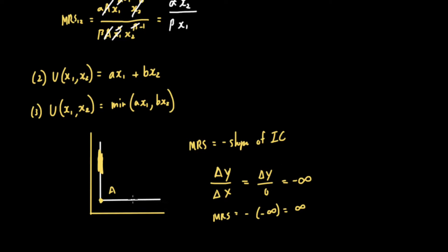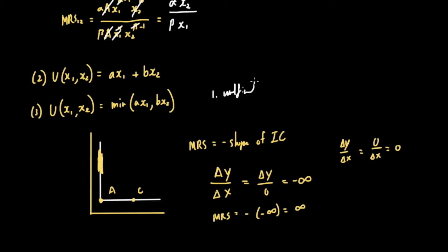On the other hand, if the consumer consumes at point C, the marginal rate of substitution is equal to zero because there is no change in y. Change in y over change in x gives zero over change in x, which equals zero. So in the case of perfect complements, the marginal rate of substitution can take three values: it is undefined at the kink point, infinity above it, and zero to the right of it.